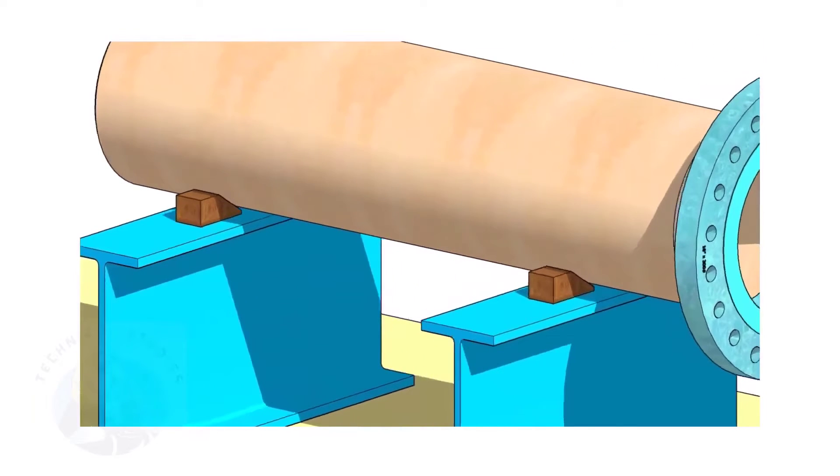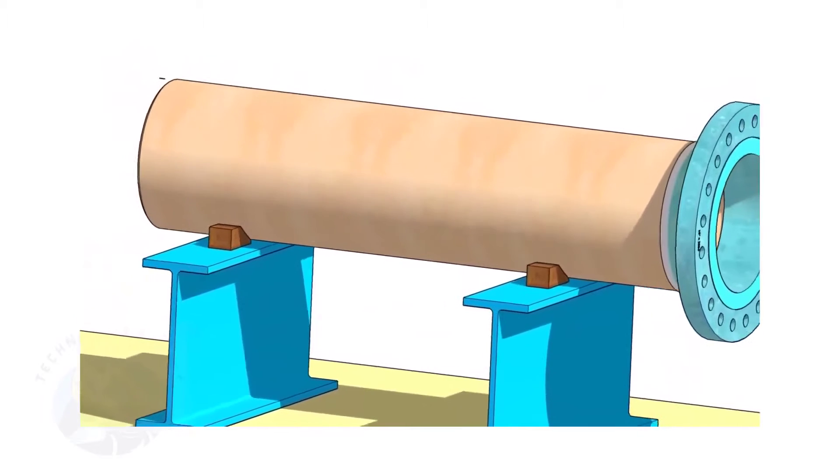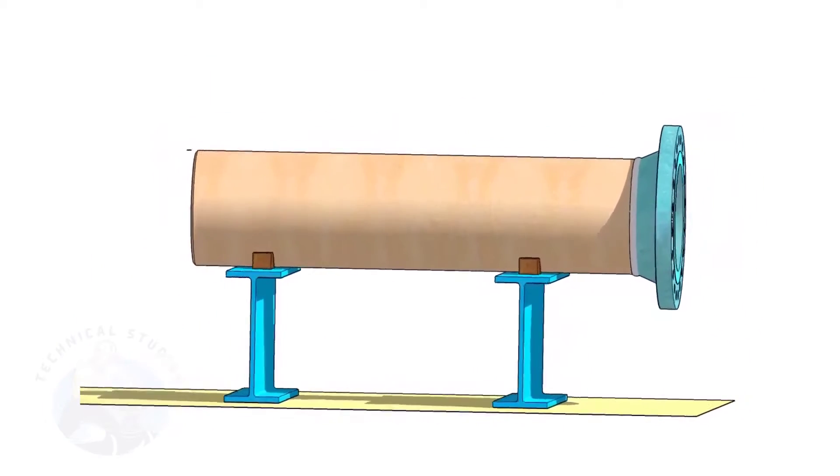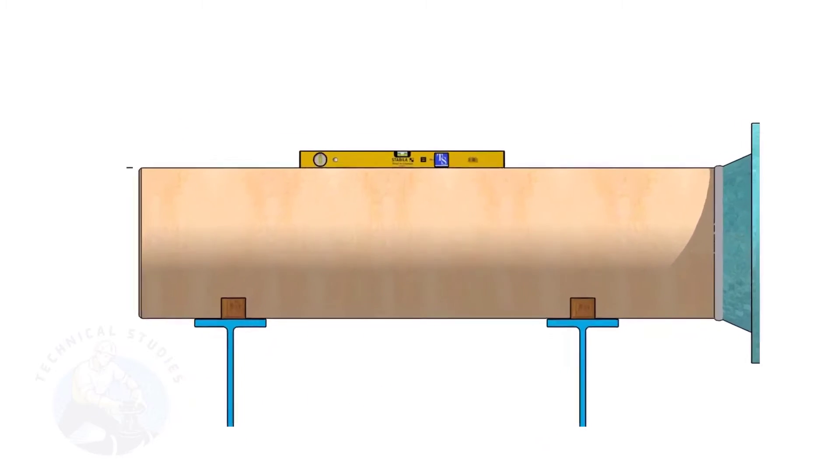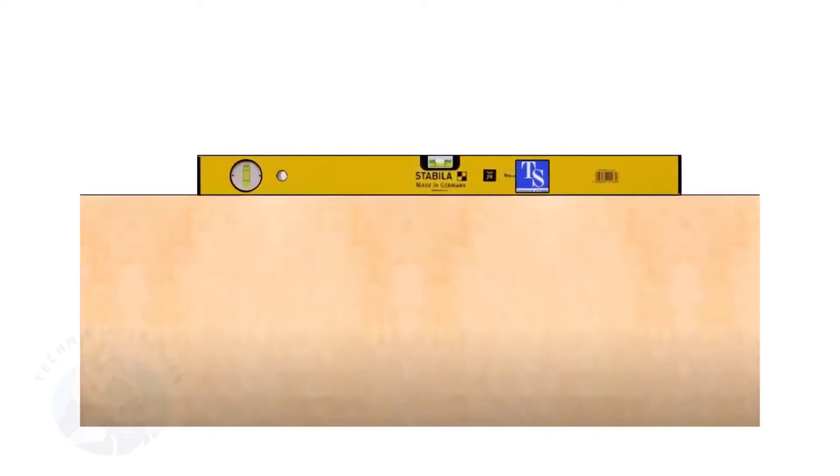Provide proper supports on both sides of the pipe to prevent rotation. Correct the level of the pipe. Check the plumbness of the flange a second time.